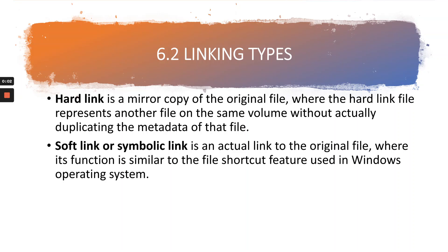We move to the next topic in the chapter, which is the linking types. In Linux, links are important to provide a convenient method for users in accessing their files or data in the Linux system. There are two types of links that users can create in Linux: the first one is hard link, and the second one is soft link. A hard link is a mere copy of the original file, where it represents another file on the same volume on the hard disk without actually duplicating the metadata or the inode of the file.